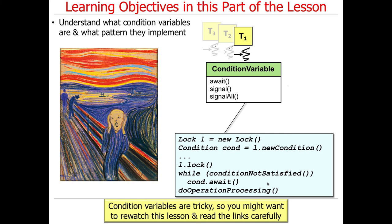Condition objects are arguably the most tricky thing we've covered to this point. So I recommend you go back and rewatch this lesson, maybe read some of the links. And it definitely takes some head scratching. It's very, very cool. Once you get the pattern, it's not too hard, but it's subtle. And the reason why it's subtle is a bunch of moving parts.